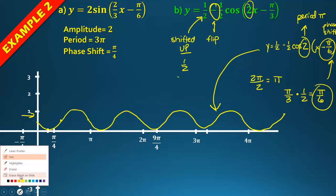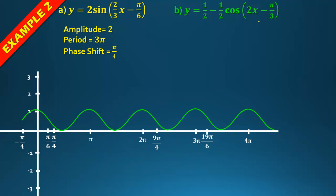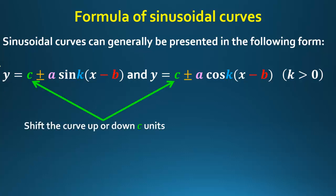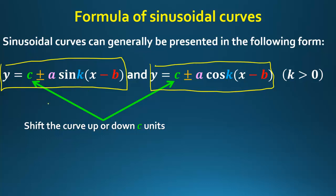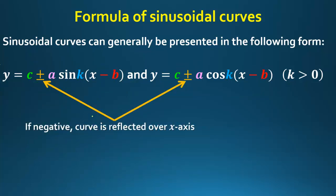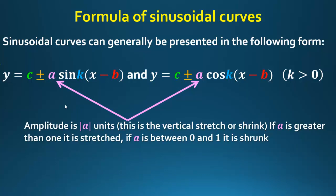To summarize all transformations: C shifts the curve up or down — positive C shifts up, negative shifts down. A negative sign in front of the function reflects it over the x-axis. The amplitude A controls vertical stretch or shrink — greater than 1 means stretched, between 0 and 1 means shrunk.